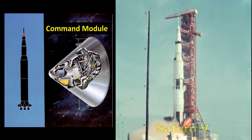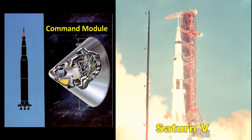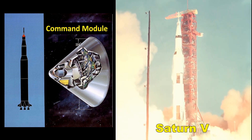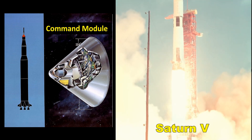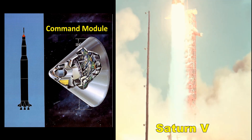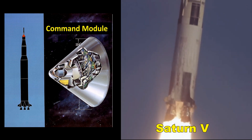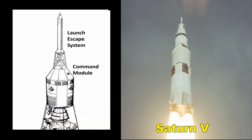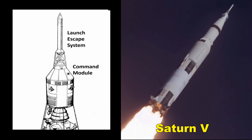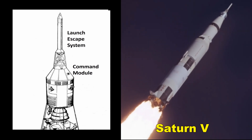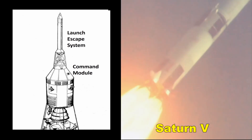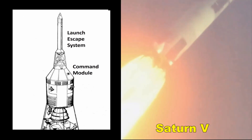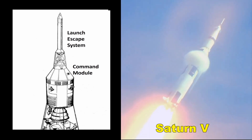Let's look at another example. This is the Saturn V rocket that carried astronauts to the moon in the late 1960s and early 1970s. The small command module near the top was where the astronauts sat. The rocket was built with a series of trip wires running up the side which were attached to the launch escape system — basically a small rocket attached to the command module. In the event of an emergency like an explosion of the main rocket, the trip wires along the side would be cut, triggering the launch escape system to fire and carry the command module and the astronauts inside away from the explosion.